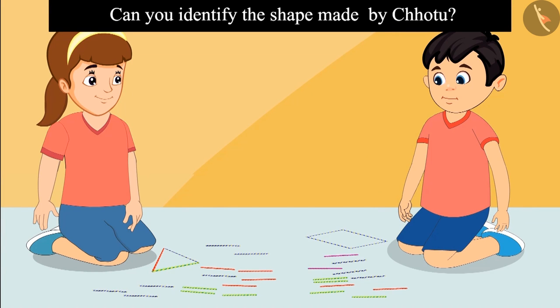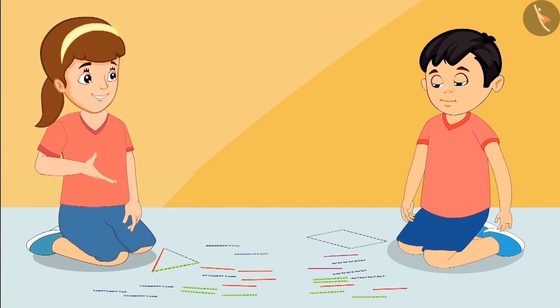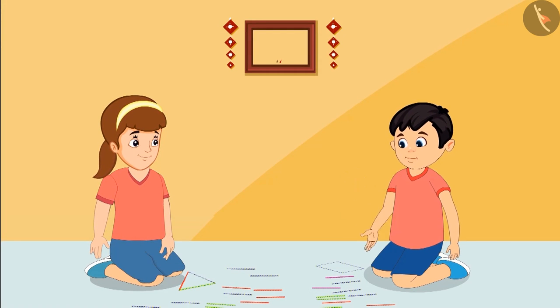Children, do you know which shape is this? Come on, let us see. It is made of four straws. This means it is a rectangle. Yes, Neha, you are right.